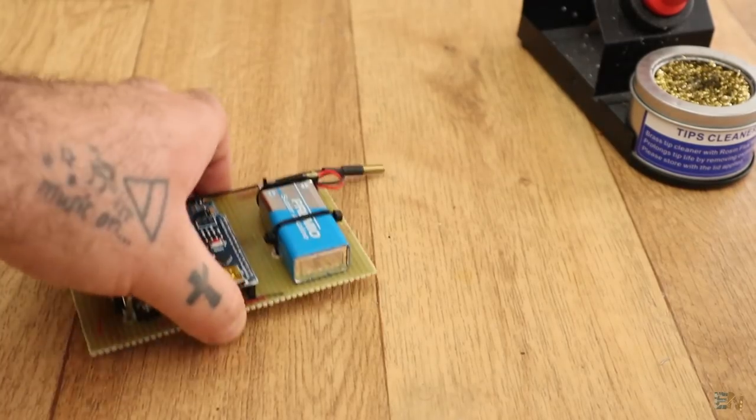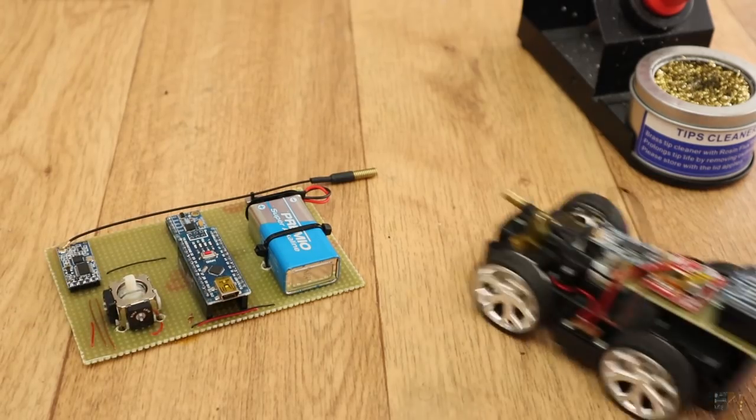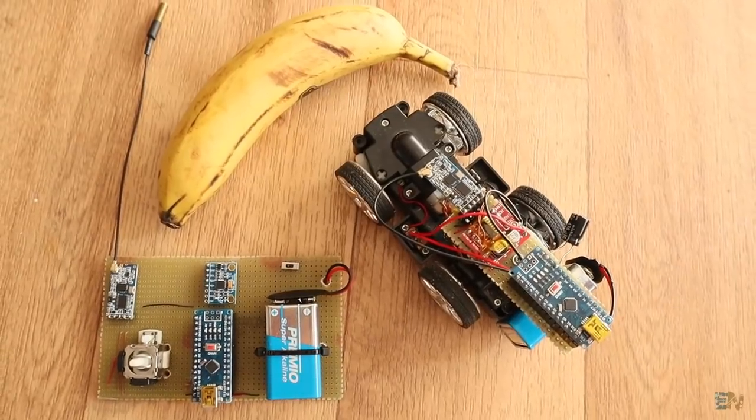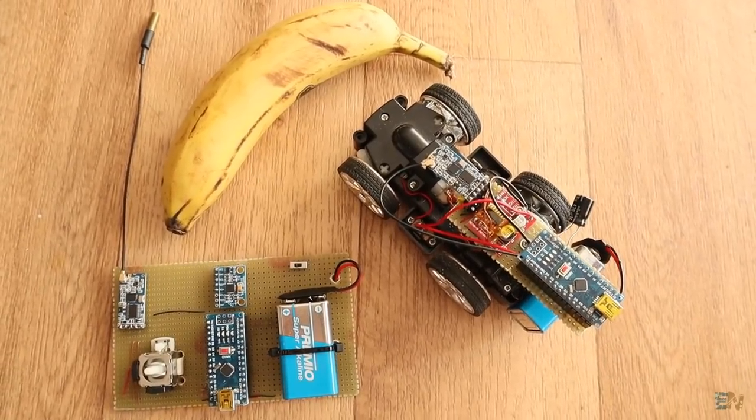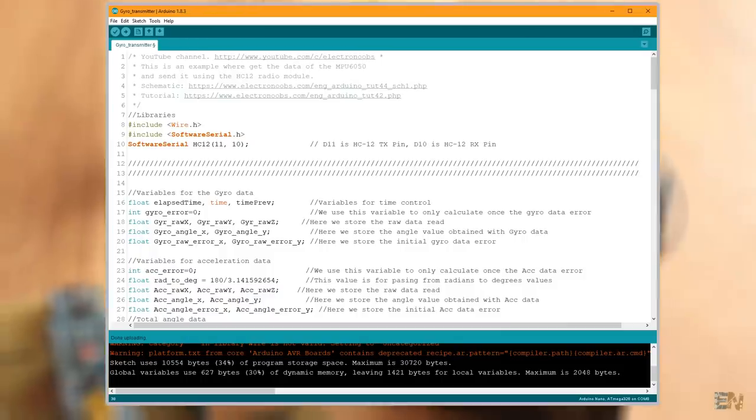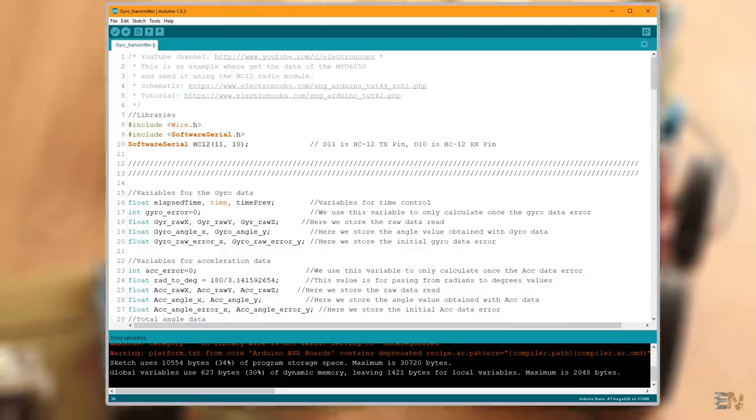OK, so now we have both the transmitter and the receiver for this project. It's time for the code. You could download the codes from below and then open them in the Arduino IDE. This here is the transmitter code. Please read all the comments in both codes in order to understand more.